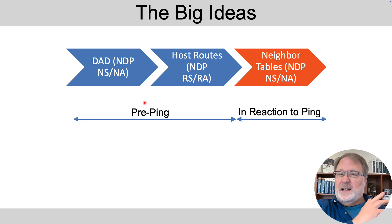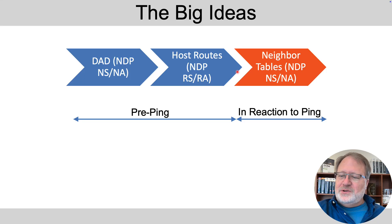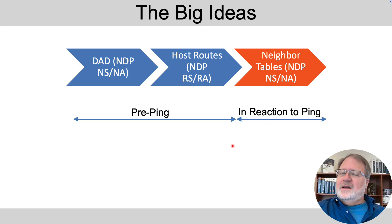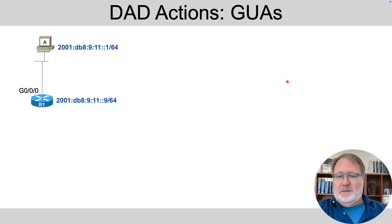Then host routes are added by the host — host A in this case, since we're focusing on that upper subnet. That's done with NDP RS and RA messages, or the information is gathered that way. That gets us up to the overhead that's needed beforehand. Then, in reaction to the ping, we need to build neighbor table entries with NS and NA messages.